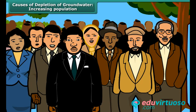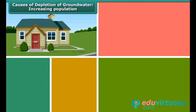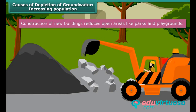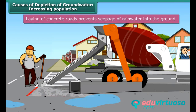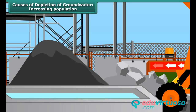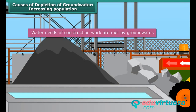World population, as we all know, is increasing fast. People need more space for houses, shops, offices, roads and pavements. Construction of new buildings reduces open areas like parks and playgrounds. Laying of concrete roads prevents seepage of rainwater into the ground. Moreover, a large quantity of water is required for construction work. Ground water is often used for this purpose. All these factors lead to the depletion of ground water.